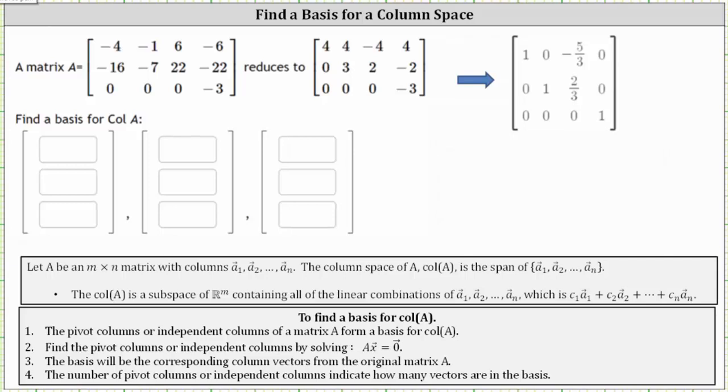We were given matrix A, which is a three by four matrix, and we're also given the matrix in row echelon form here in the second matrix. I've also found the reduced row echelon form here on the far right. We're asked to find a basis for the column space of A.